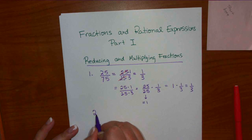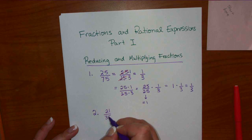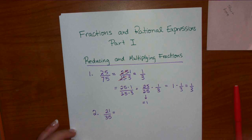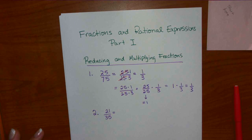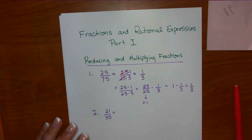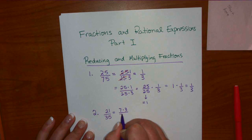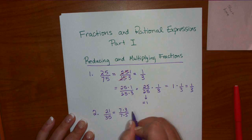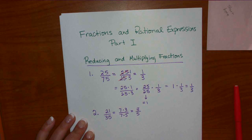Let's do another example: 21 over 35. What factor do these two have in common? 7. So 21 is 7 times 3 and 35 is 7 times 5. The 7 over 7 equals 1, and all we have left is 3 over 5.